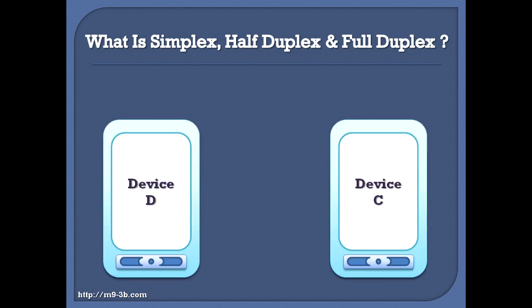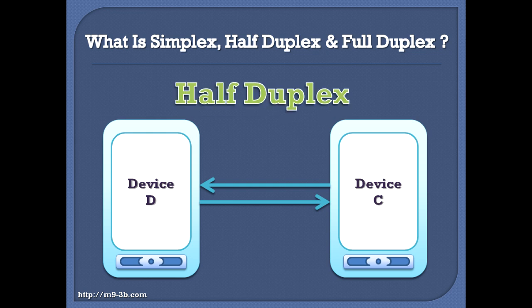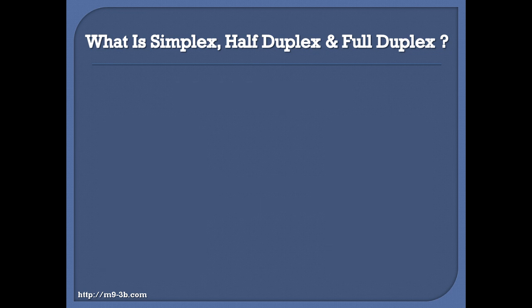Now let's say that we have two other devices, device C and device D. Both devices can transmit and receive, but if device C is transmitting, then device D must be receiving and the opposite is true. This way of communication is called Half-Duplex. So Half-Duplex is a two-way non-simultaneous communication where the two devices can transmit and receive, but not both at the same time. An example of a Half-Duplex device is a walkie-talkie.